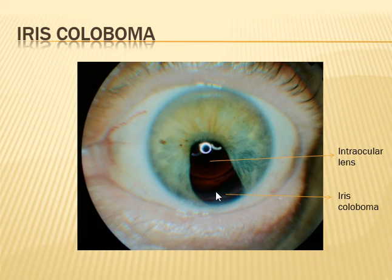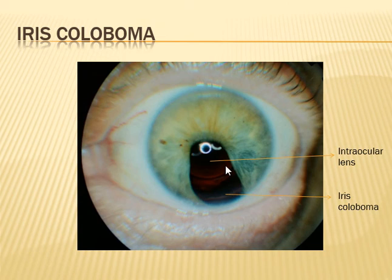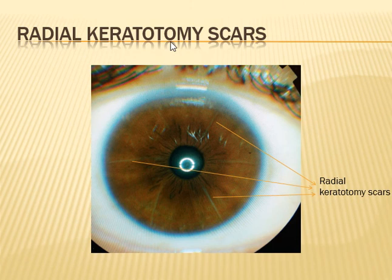Here you can see the iris and an intraocular lens — this patient had cataract surgery done. In this part, the iris is missing. The possibility is an iris coloboma, where the iris is absent in that area. Another possibility is that trauma can cause a defect in the iris tissue like an iridectomy, but since this is inferior, it is more likely a congenital iris coloboma.